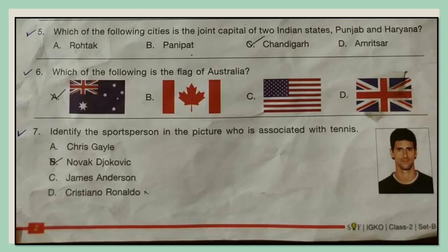Question 5. Which of the following cities is the joint capital of two Indian states, Punjab and Haryana? A. Rohtak, B. Panipat, C. Chandigarh, D. Amritsar.